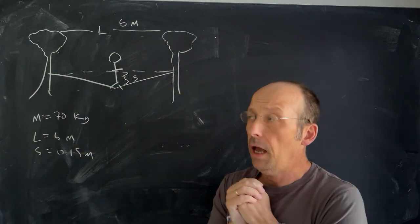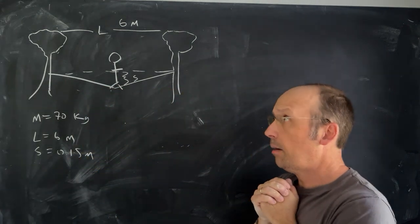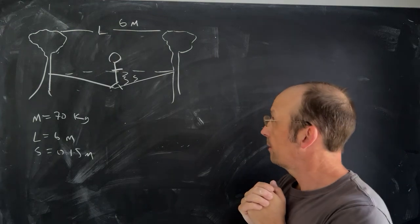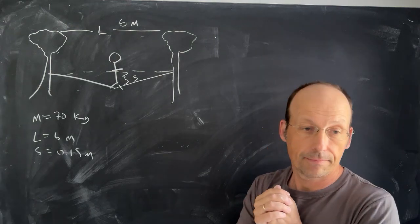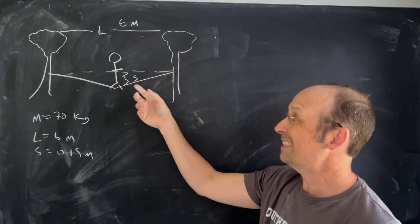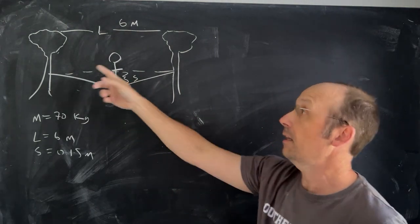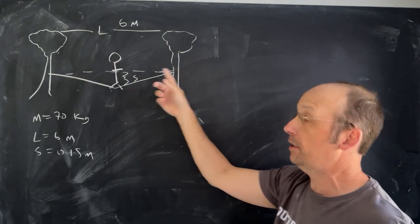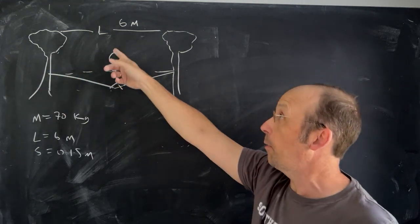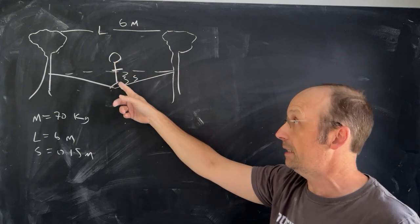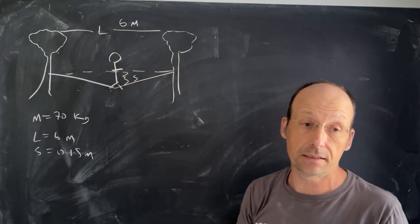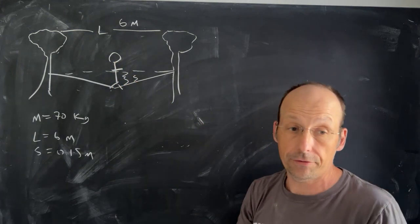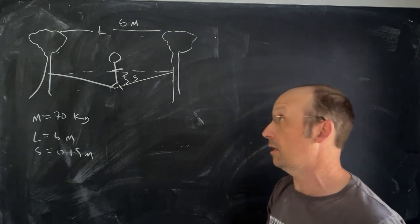Here is a classic problem. A person is standing on a tightrope — the length of the rope before the person stands is six meters, tied between two trees. When the person stands on the tightrope, it bends down a distance of 15 centimeters, or 0.15 meters. The question is: what is the tension in the tightrope?